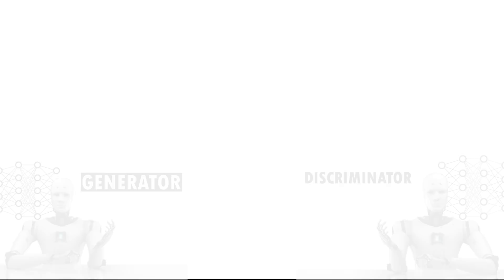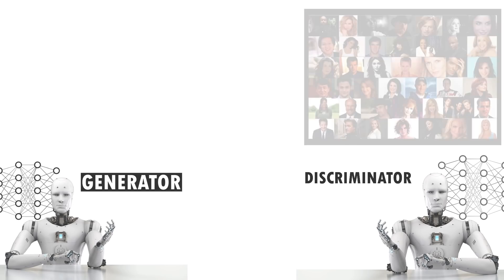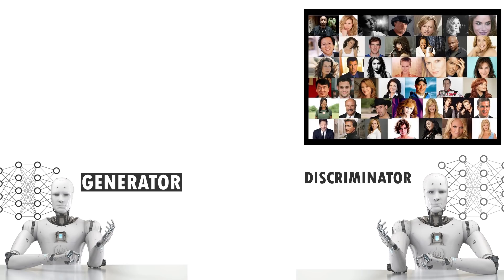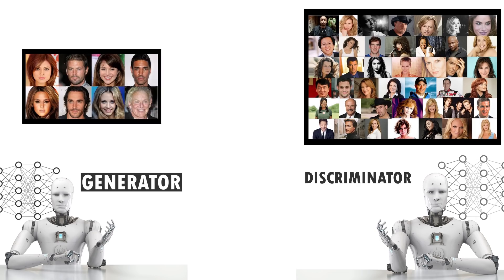Researchers taught the discriminator network how to identify real faces of celebrities while the generator was programmed to create images of faces with the goal that they would be authenticated. Then the networks started dueling each other off of very simple 4x4 resolution images of a few skin-colored pixels.